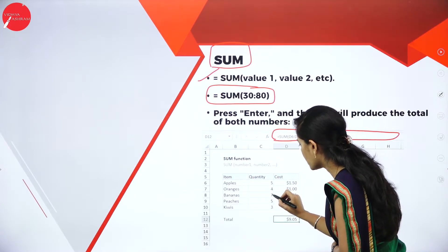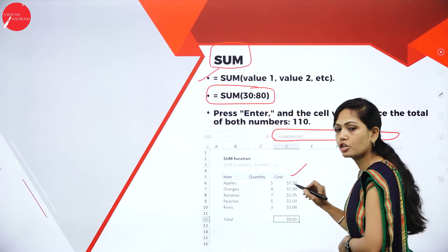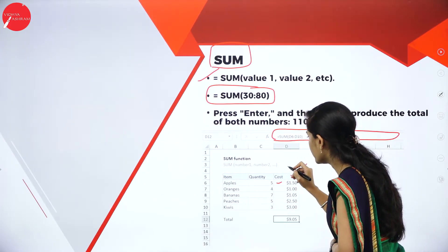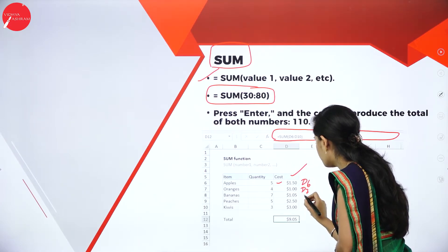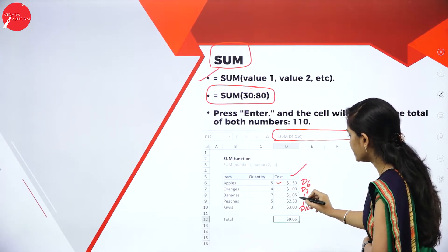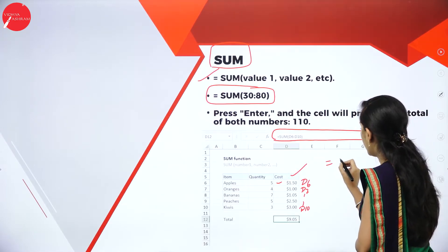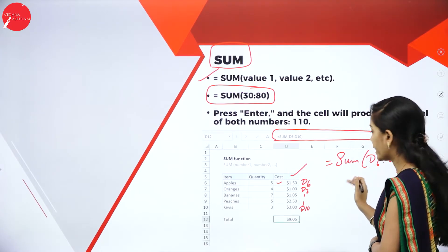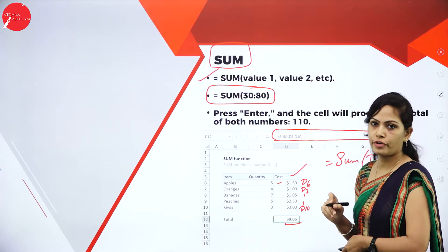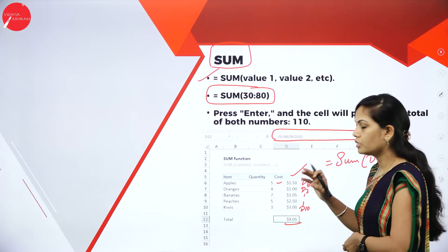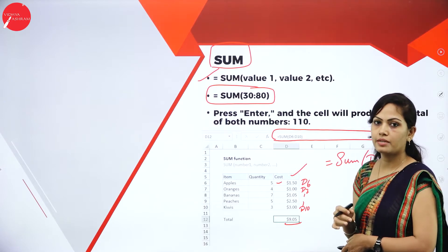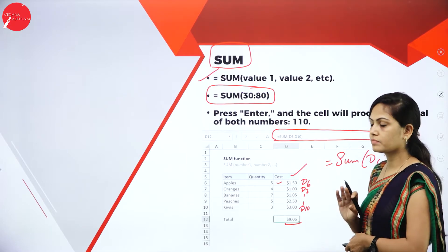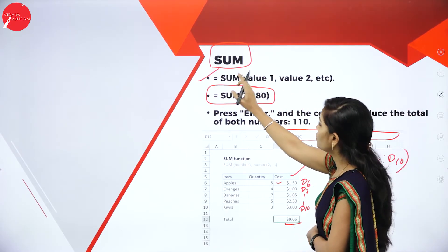Here, the quantity values are 5, 4, 7, 3. I will add this cost. The cell addresses are D6, D7, D8, D9, D10. So I will use the formula =SUM(D6:D10). Using this formula, you will get the total value — 9.05. This data is in dollar format, so you get it in dollar format. You can change it to number, percentage, etc. The syntax for sum is =SUM(cell address from start to end).